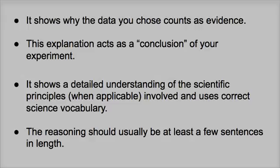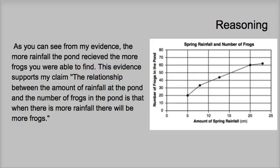I'm going to show you two examples. The first is without scientific principles. Here's the reasoning: As you can see from my evidence, the more rainfall the pond received, the more frogs you were able to find. This evidence supports my claim — the relationship between the amount of rainfall at the pond and the number of frogs in the pond is that when there is more rainfall, there will be more frogs. So it ties everything together.